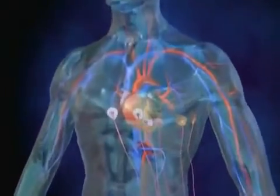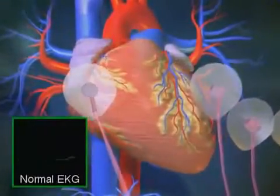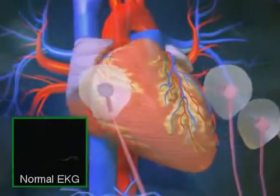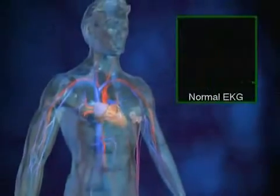The heart is a muscle that contracts in rhythmic sequence for the duration of our lifetime. Each beat is stimulated by an electrical signal that is generated by the heart's conduction system. A normal heart beats 60 to 100 times per minute.